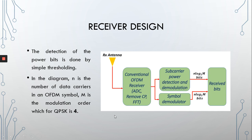That was transmission. When we come to reception, the same principle applies. Looking at the receiver of conventional OFDM, after the conventional OFDM receiving processes — ADC, removing the cyclic prefix, and FFT — you'd have only one demodulation block, and consequently only one stream of bits. In OFDM-SPM, however, you have two demodulation blocks in parallel.